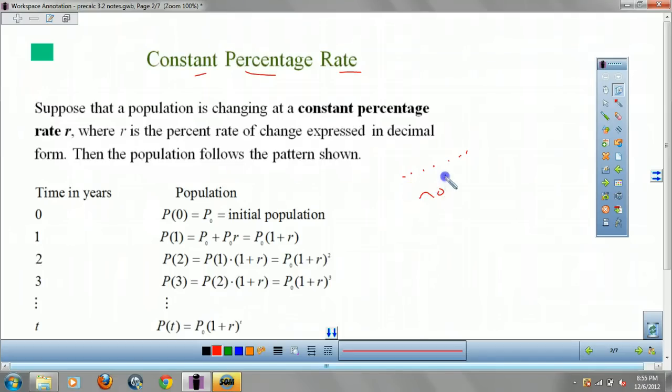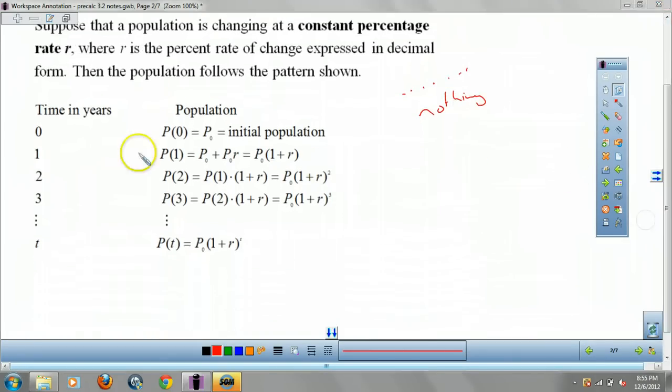Nothing's noteworthy. The reason why I want to show you this is you have your initial, zero, initial in one year is whatever you started with plus whatever you had times your rate, and you add one plus and you keep adding to the years and that's where you get your P, your initial times one plus r to the t. The only thing that's noteworthy here is this guy right here. This is constant percentage rate.